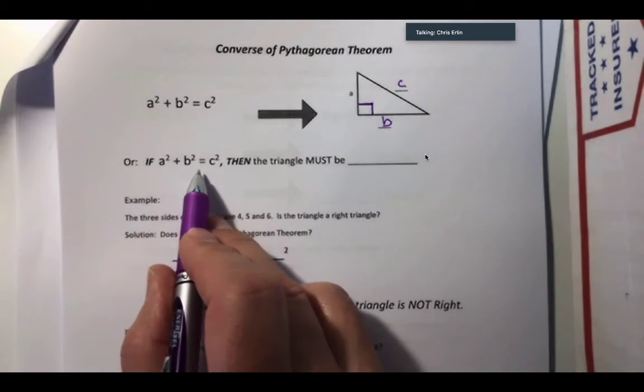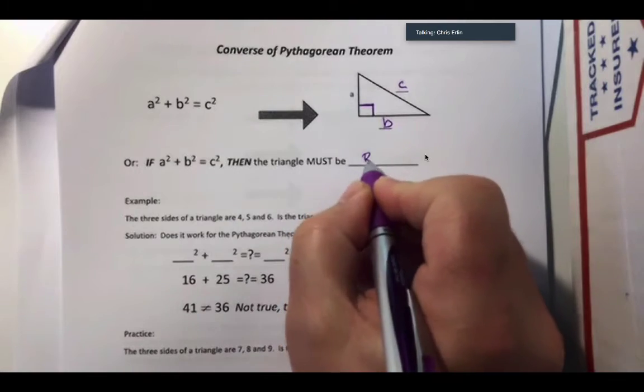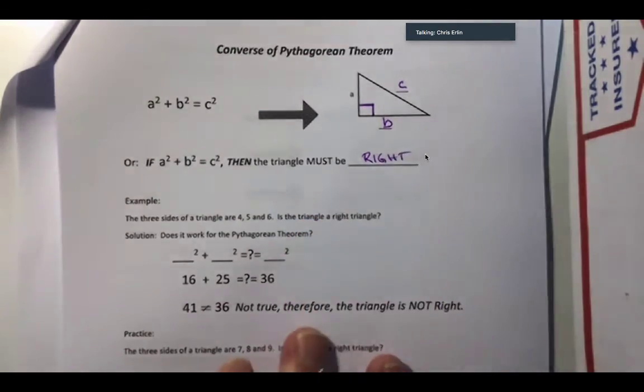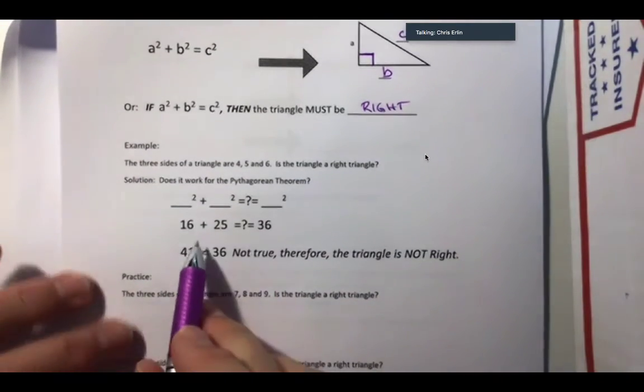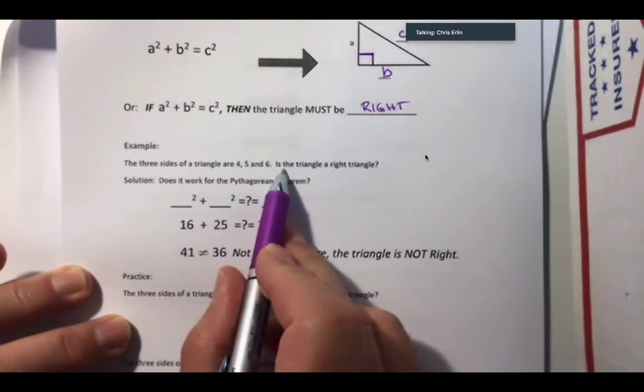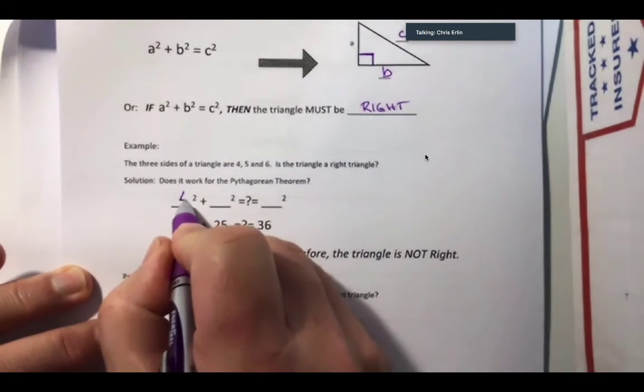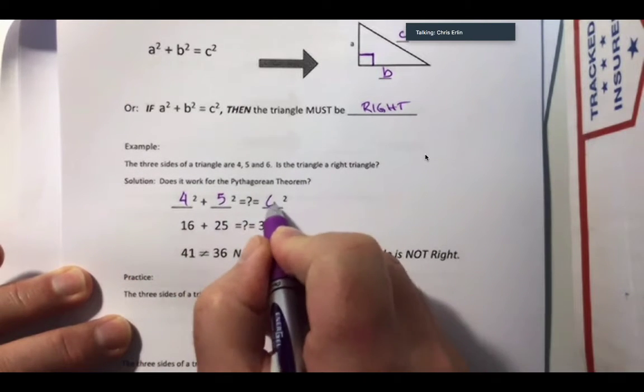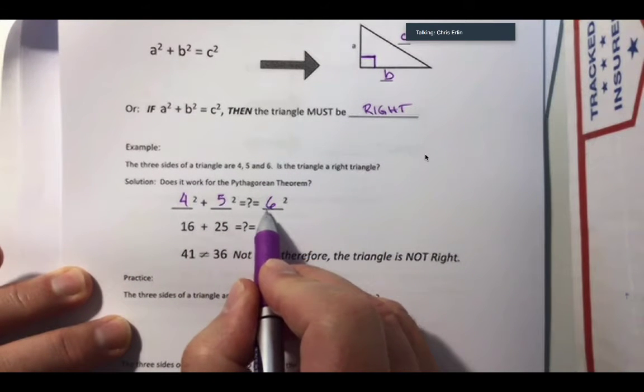So if a squared plus b squared equals c squared, then the triangle must be right. We can apply that here to say, if I know that the three sides of a triangle are 4, 5, and 6, is the triangle a right triangle? I can put in 4, 5, and 6, noting that the biggest one is over here, the hypotenuse.